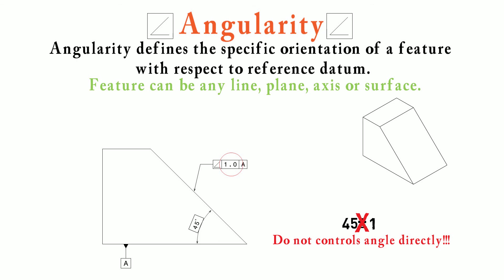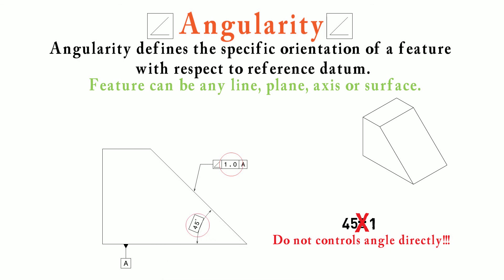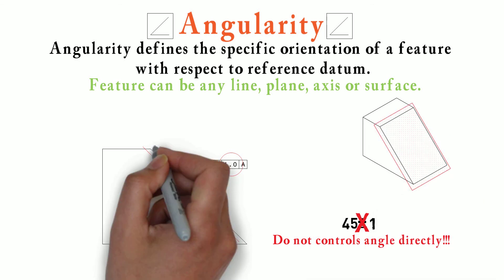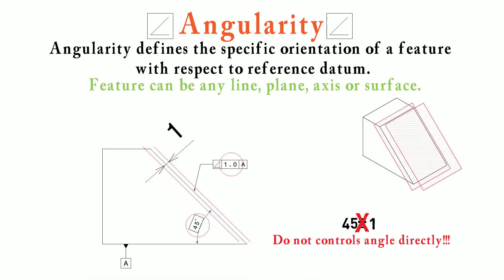It is 1mm with respect to datum A, and here we have a basic dimension of 45 degrees. If we draw a plane parallel to 45 degrees in 3D with respect to A, and one more parallel plane which is 1mm apart, our actual part should lie in between these two planes which are at 45 degrees to our datum. So this 1mm does not mean 45 degrees plus or minus 1mm. Instead, it means this surface should lie in between the parallel planes which are 1mm apart and at 45 degrees with datum A.